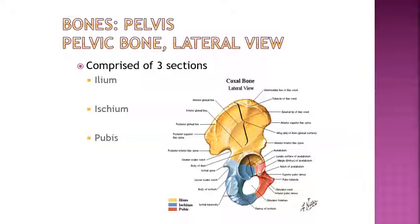Each pelvic bone is comprised of three sections: the ilium, ischium, and pubis. These bones are color-coded here — the ilium is in yellow, the ischium is in blue, and the pubis is in red. It's important to be able to distinguish the borders because there are no major distinct borders between these three bones; they're all one big section. You have to first be able to separate the individual bones and then identify the specific landmarks.